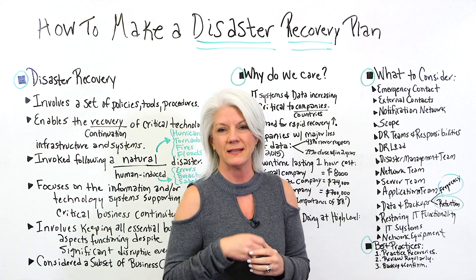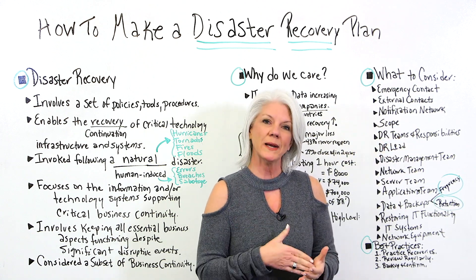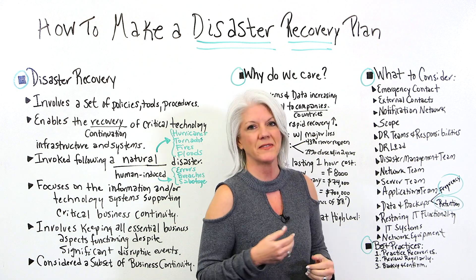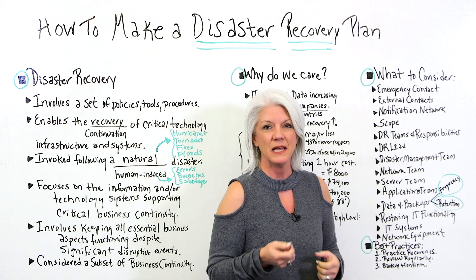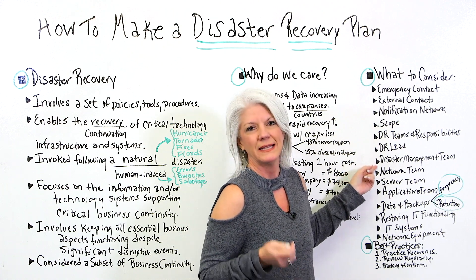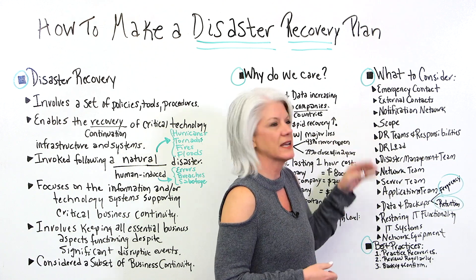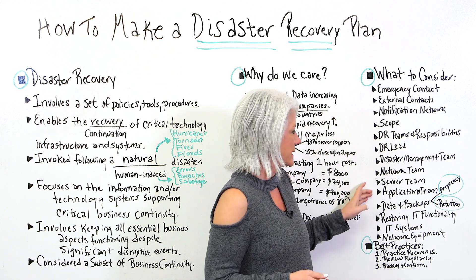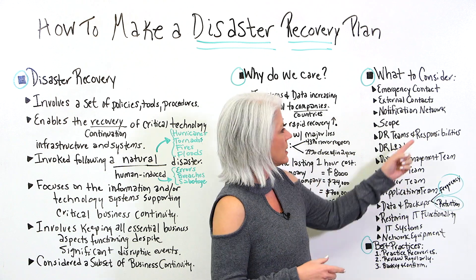We need to understand the scope of the recovery and the disaster recovery teams and responsibilities. When it is invoked, every member on the team needs to know specifically what they're responsible for. It's important to know who is the disaster recovery lead. We also need to know the disaster management team, who are responsible for keeping the approaches and processes up to date, as well as the network team, server team, applications team, and the data and backup recovery team.